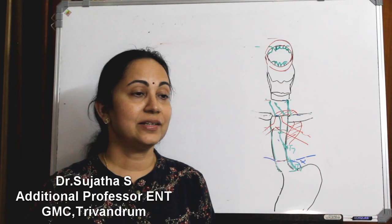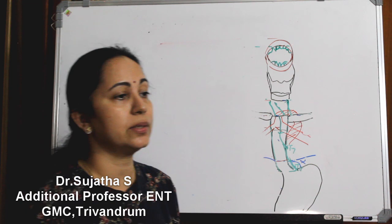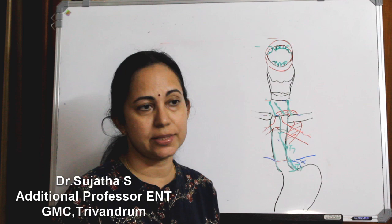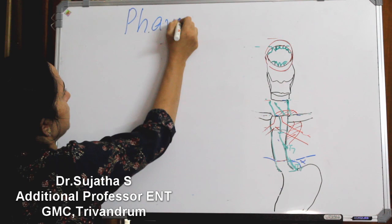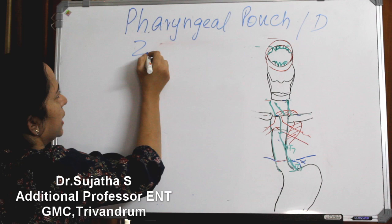While discussing the anatomy of the esophagus, I told you that there are two triangles - Killian's triangle and a Laimer's triangle. The pharyngeal pouch is important clinically as well as for exam purposes, and is usually asked as a short mark question. So pharyngeal pouch, or Zenker's diverticulum, is also called Zenker's diverticulum.